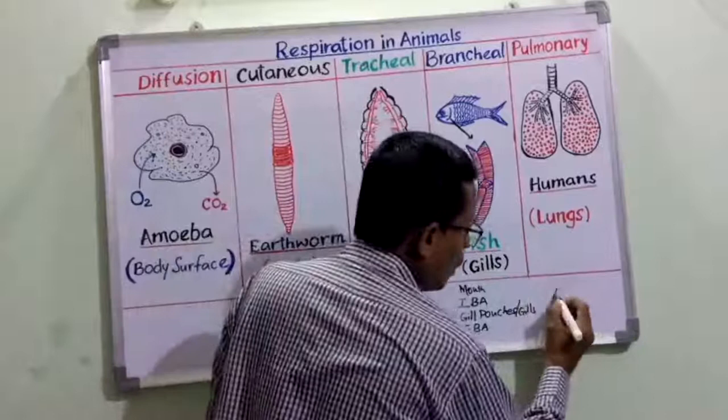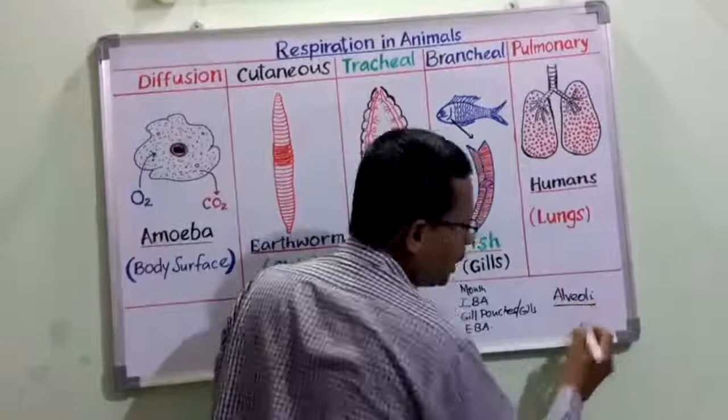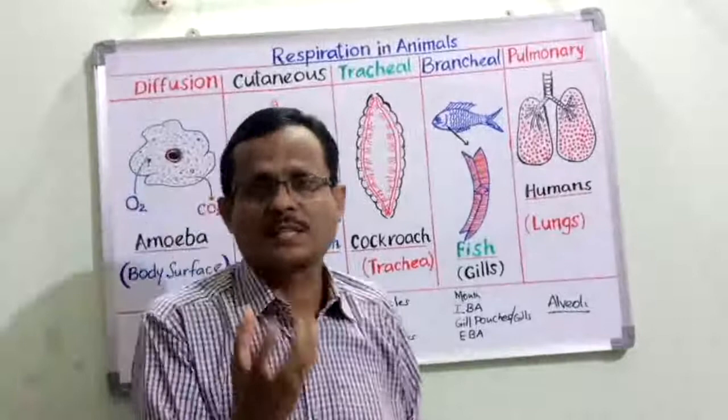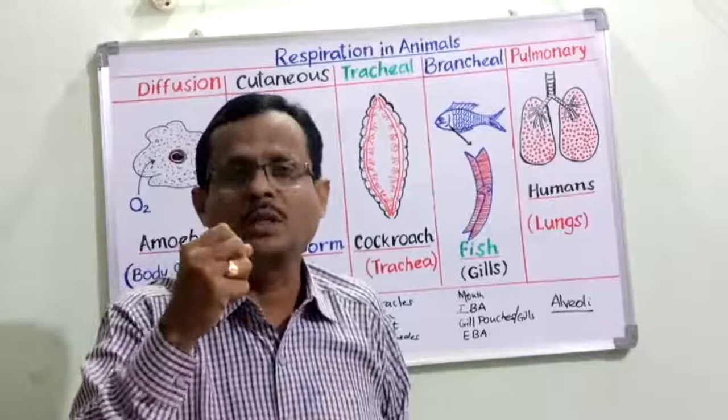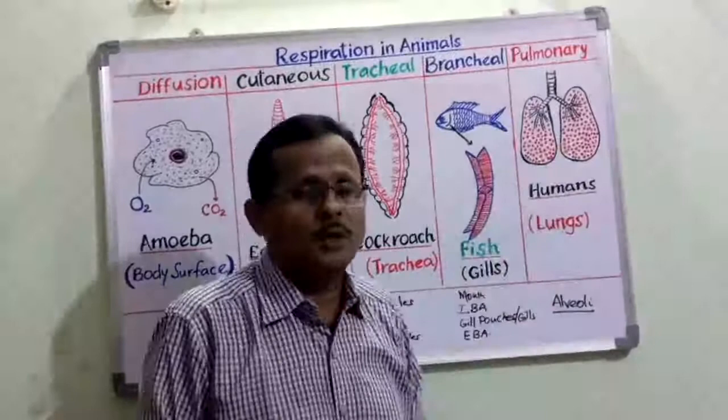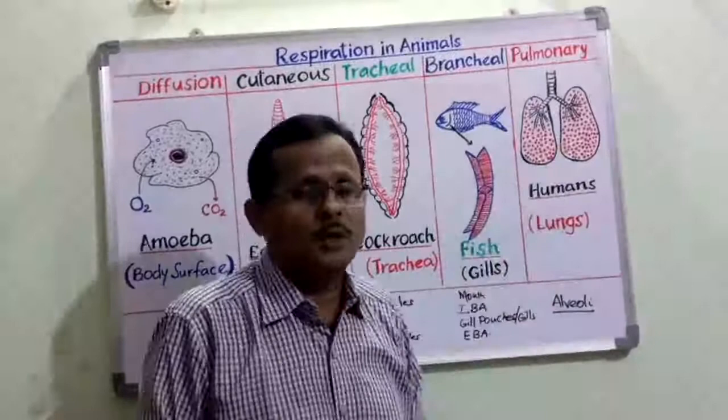The alveoli are the sites for respiratory gas exchange during respiration in human beings. The lungs are covered by a double-layered membrane called the pleura, and between these pleural membranes is a fluid called pleural fluid, which supports the lungs and prevents them from being damaged by external blows and shocks.